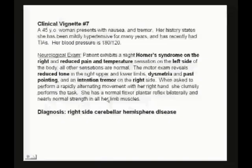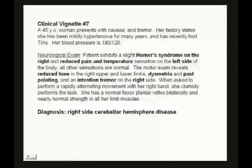Right side cerebellar hemisphere disease. With the right cerebellum, you think about incoordination on the right side. But this patient also has a slight Horner syndrome on the right — that wouldn't come from the cerebellum — and reduced pain and temperature on the left. We're thinking brainstem. Right side of the brainstem gives a right Horner's and a left-side pain and temperature problem. So we're somewhere on the right, and it moves up into the cerebellum — the intermediate and lateral zones — because we have dysmetria, past pointing, and intention tremor all on the right side.